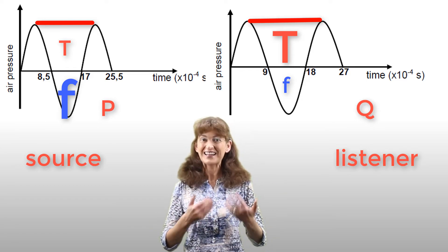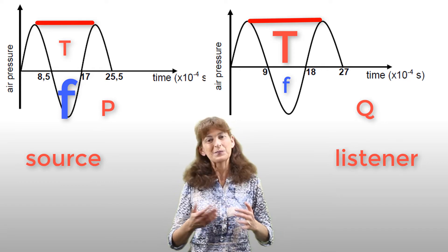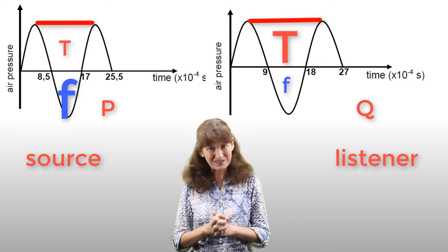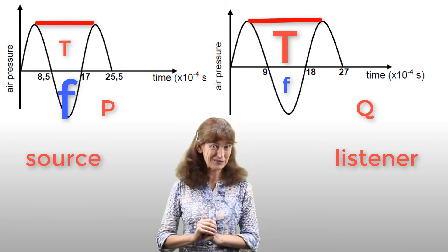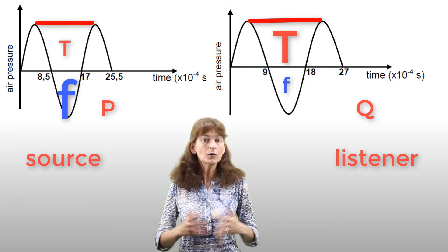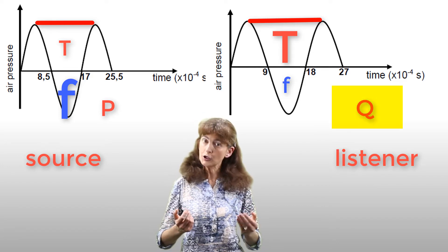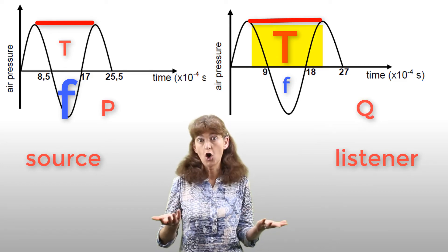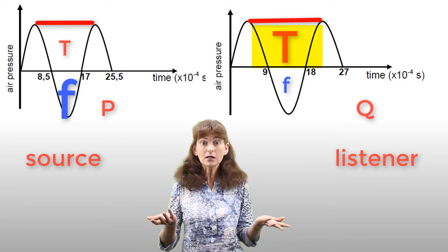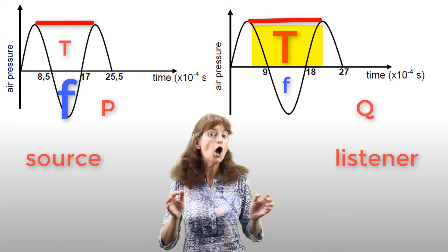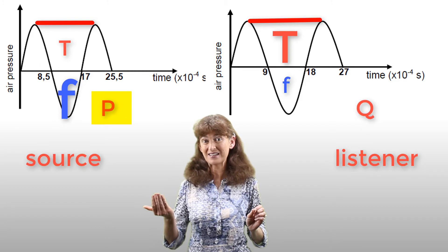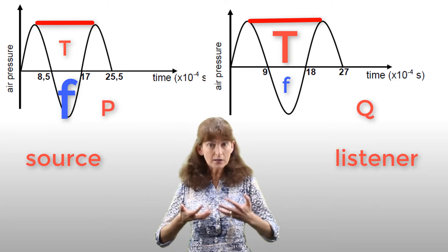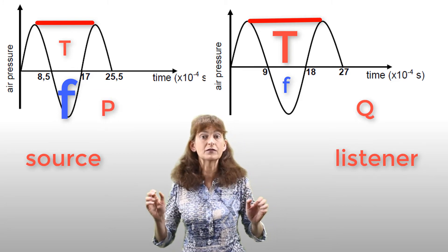What we're asked to do is to explain how we can see that from the graphs. Of course, the long answer is what I've just explained. But if we're only asked to give a reason for one mark, very briefly, we would say that Q has a longer period, or we could say a lower frequency than P. And that shows that they're moving relatively apart.